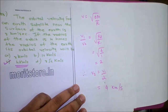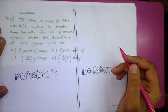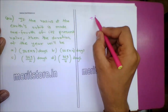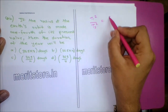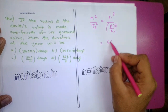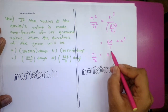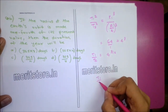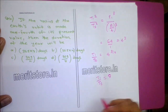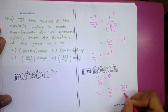Question 14: If the radius of the Earth's orbit is made 1/4 of its present value, what will be the duration of the year? By Kepler's third law: T1²/T2² = R1³/(R1/4)³ = 64. So T1/T2 = 8, giving T2 = T1/8 = 365/8 days. Option D is the correct answer.